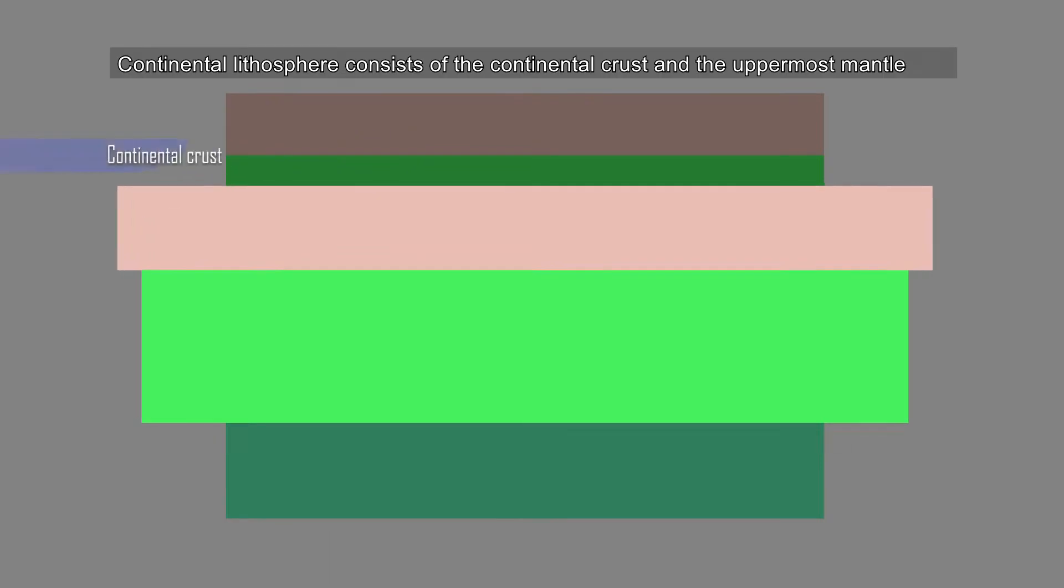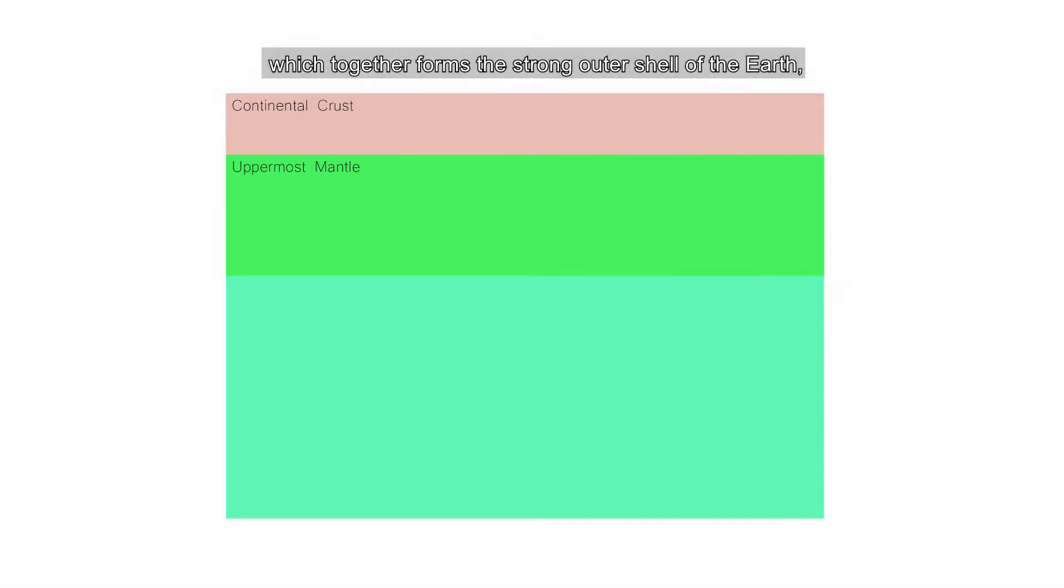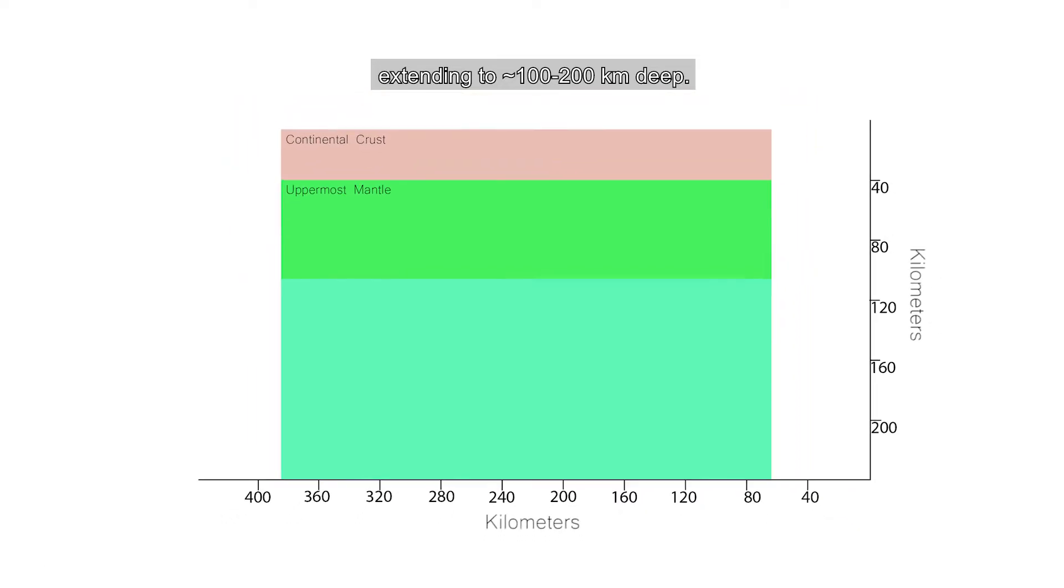Rifting affects the continental lithosphere. Continental lithosphere consists of the continental crust and the uppermost mantle, which together forms the strong outer shell of the Earth, extending to about 100 to 200 kilometers deep.